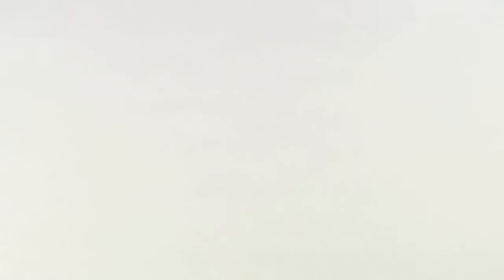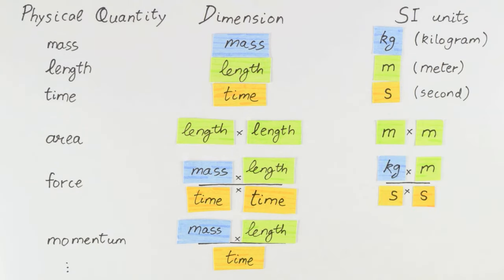In SI units, each of our fundamental dimensions has a corresponding fundamental unit, and the units of all other physical quantities can be expressed as products and or ratios of the fundamental units.